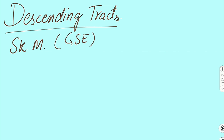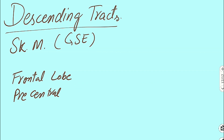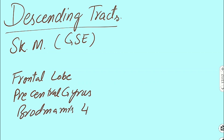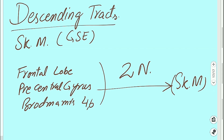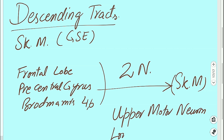For these descending tracts, the origin is the frontal lobe — the cerebral cortex. In this lobe, the gyrus is known as the precentral gyrus, and according to Brodmann, this area is labeled as area 4 to 6. From here, neurons will start, and their destination is the skeletal muscles of the body. For this function, we require two neurons, labeled as the upper motor neuron and the lower motor neuron.